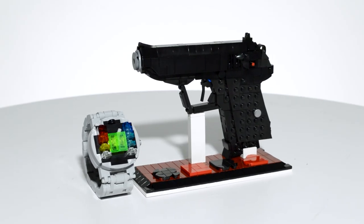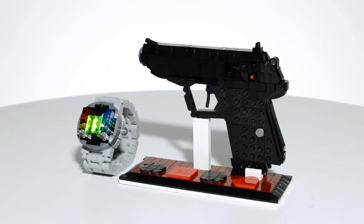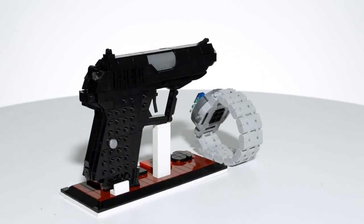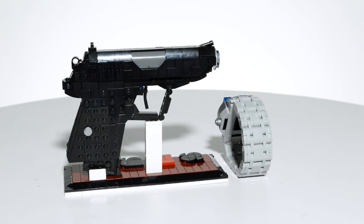The Lego PPK is just over 6 inches long, weighs only 4 ounces, and contains about 230 parts. The Q watch is 8 inches around.